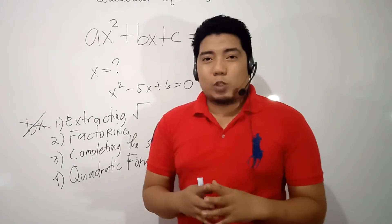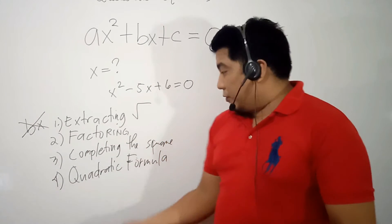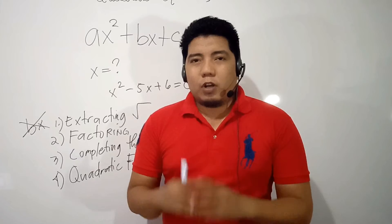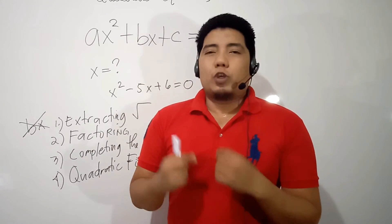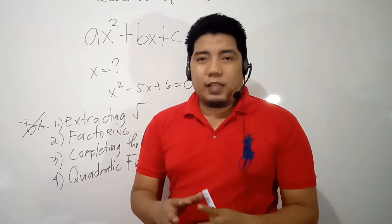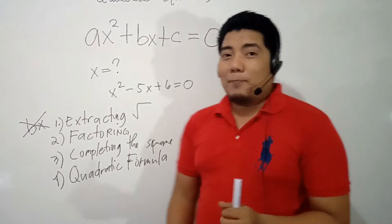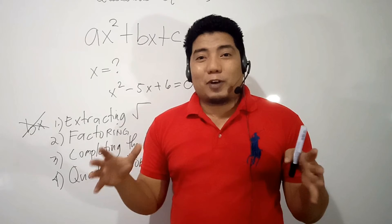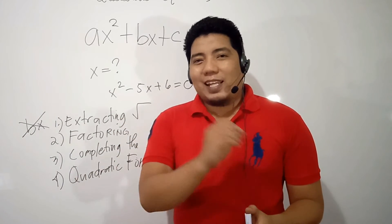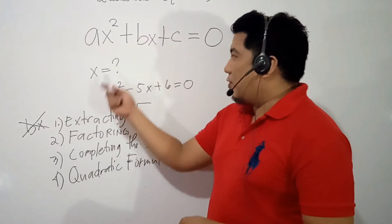Completing the square is technically the derivation of the quadratic formula. Though this method is quite tedious, it can be applied to any given quadratic equation. Finally, the safest method is the quadratic formula — you just memorize the formula, input your A, B, and C, simplify, and you will have the value of x.